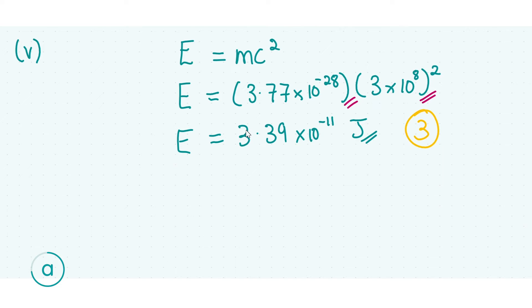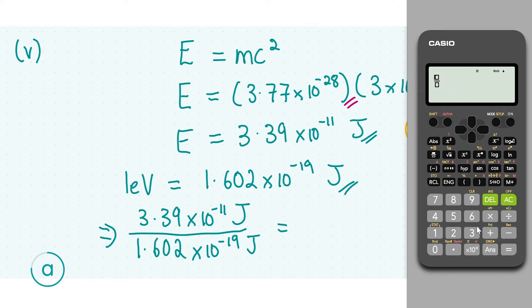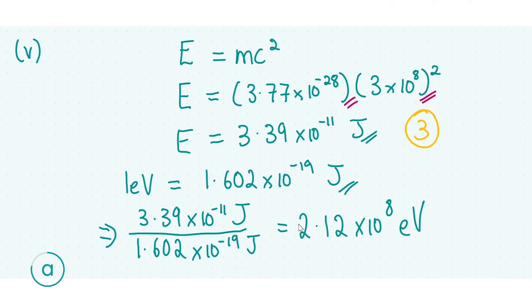To get your final two marks we need to convert to electron volts. From the formula tables book, one electron volt equals 1.602 × 10⁻¹⁹ joules. To convert, divide our energy answer by this value. The energy result is still stored as 'answer' in the calculator, so we don't need to re-enter it. Being careful with scientific notation, this gives roughly 2.12 × 10⁸ electron volts. Converting to scientific notation is good scientific practice and earns your final two marks.